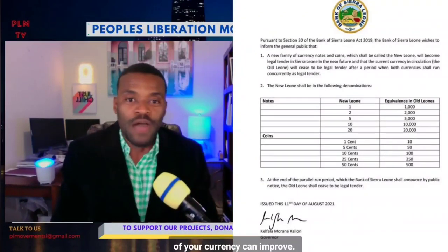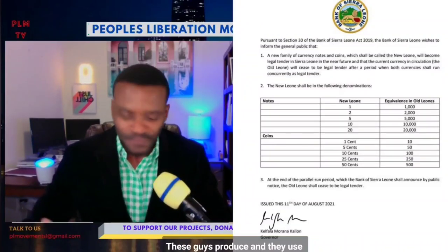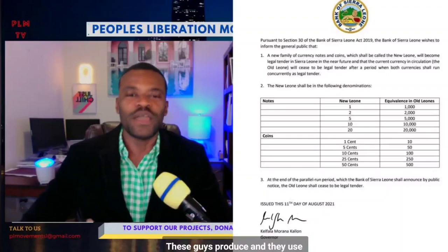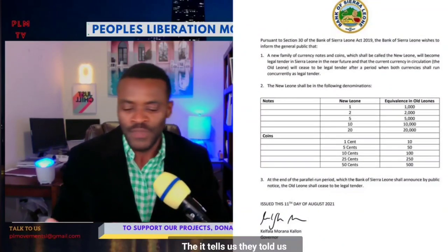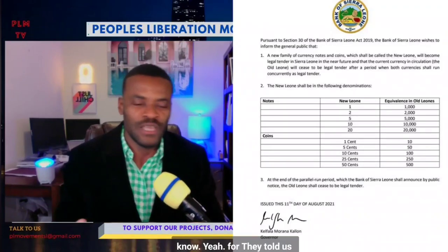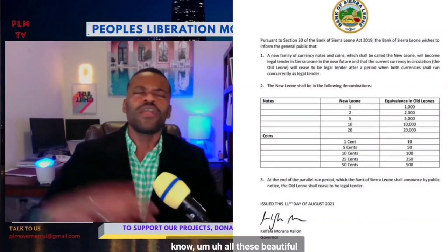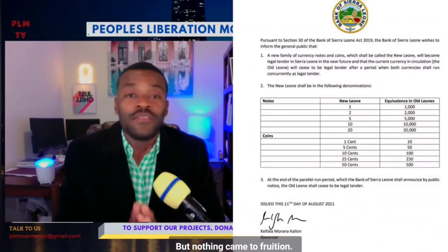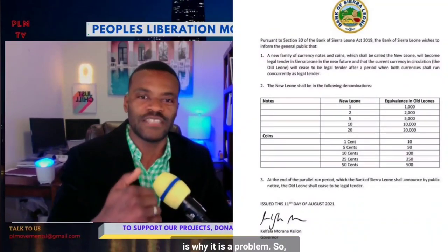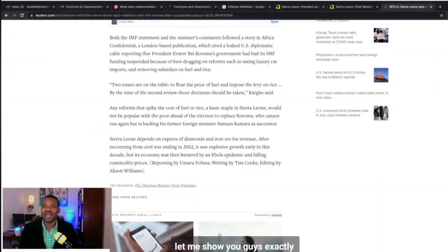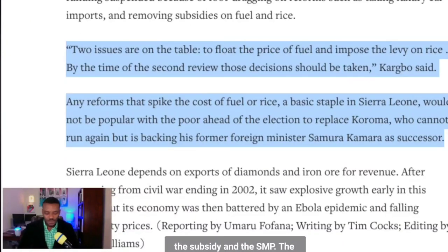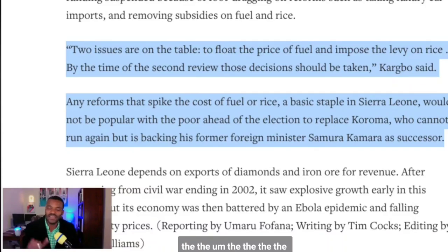Why is the dollar or the pound such a strong currency? Because those countries produce goods and sell them across the globe - that gives them value. The reason Sierra Leone's currency has no value is because we do not produce anything. Since this government came to power, they promised us a rice factory, a tapalapa bakery, all these beautiful promises - but nothing came to fruition. That is why it is a problem. And to curb their appeal to the international community, that is why they want to re-denominate - so it looks smaller in face value, but the value still remains the same.